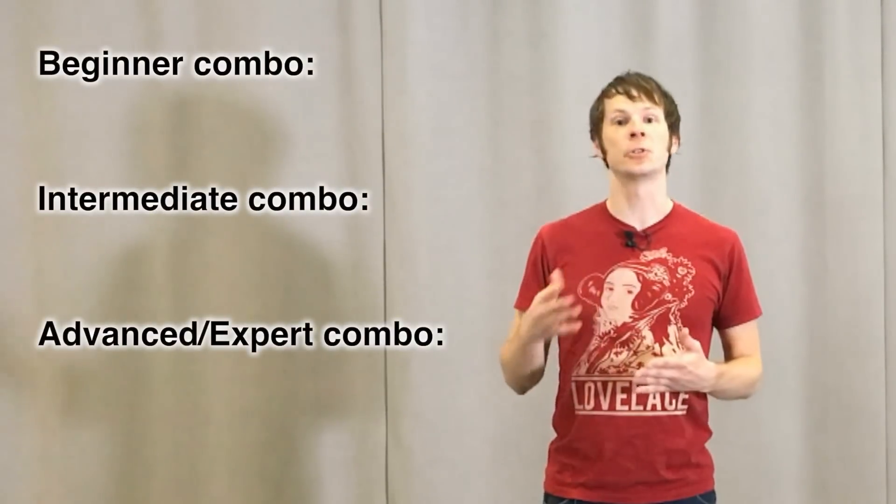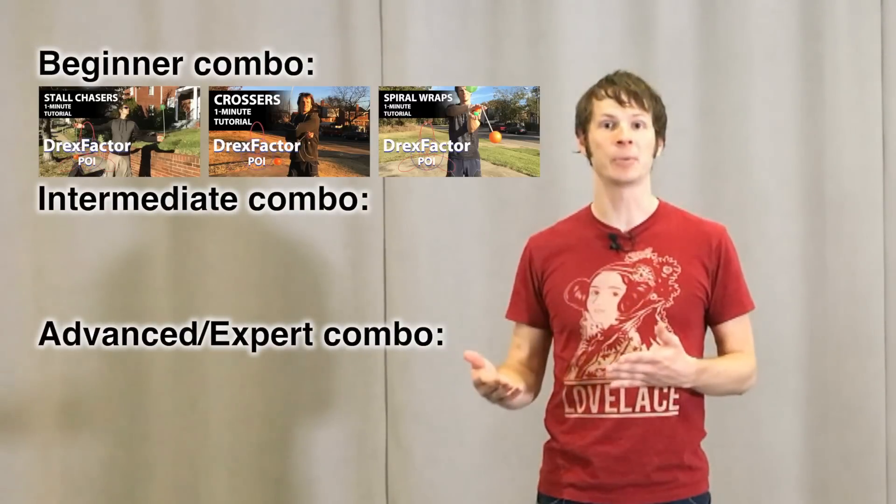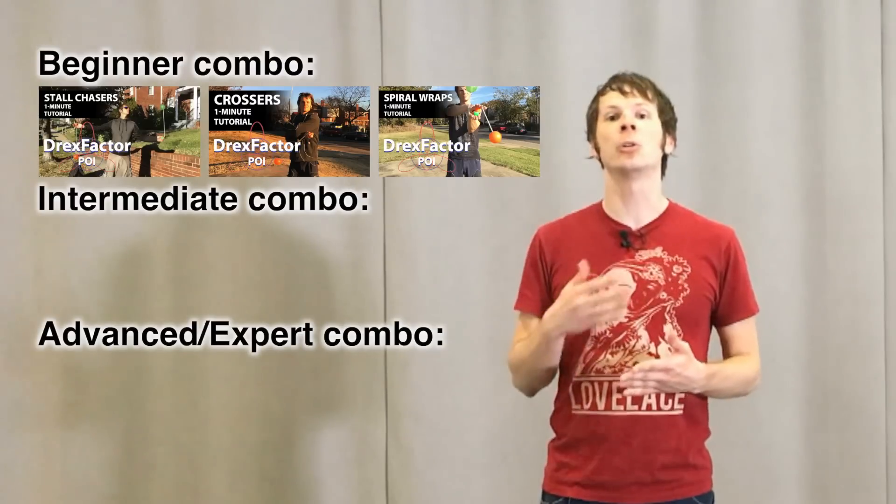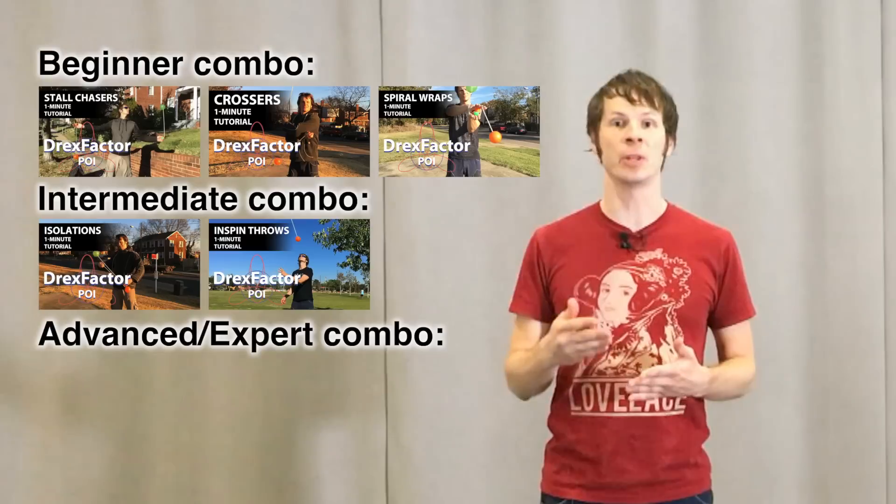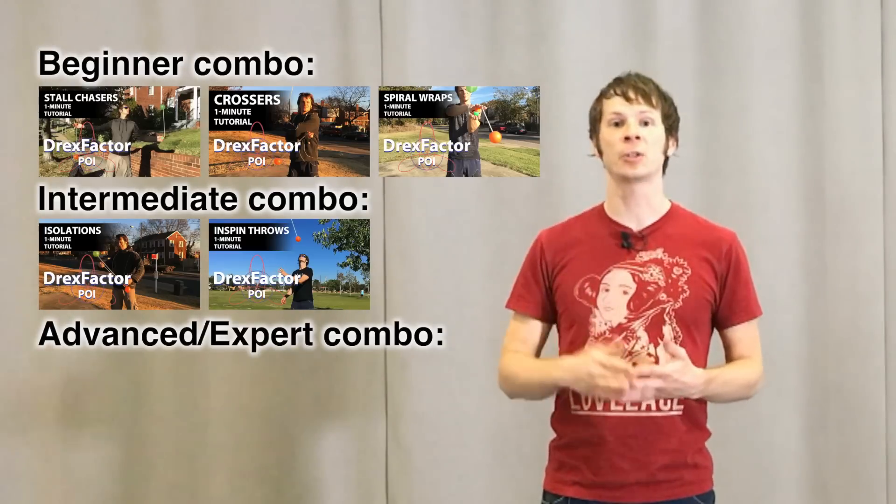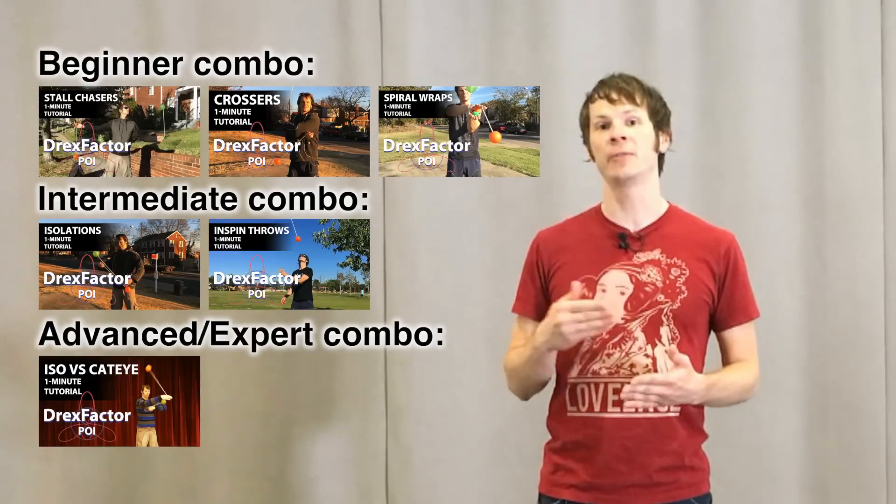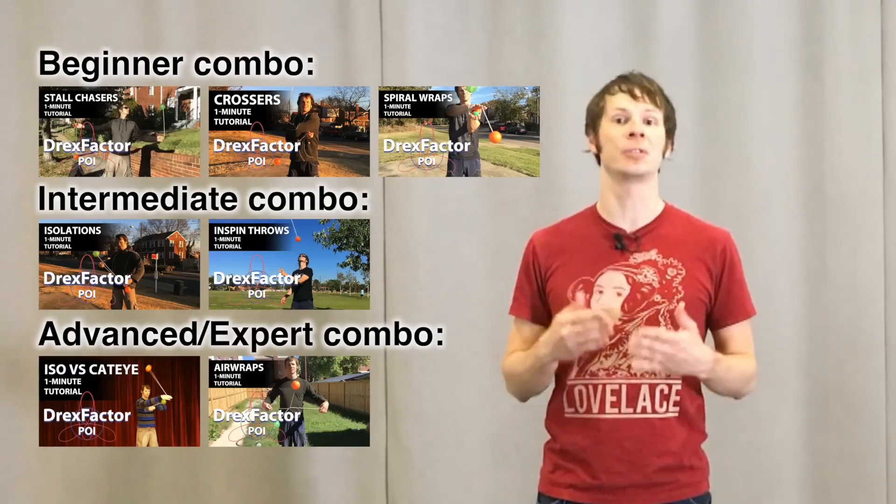For this video, here are all the tricks you'll need to have learned. For the beginner combo, you'll need to know stall chasers, crossers, and spiral wraps. For the intermediate combo, you'll also need to know isolations and in-spin throws. For the advanced and expert spinners, you'll also need to know cat eye vs isolation anti-brids as well as air wraps. I'll link to all these videos in the description as well as a playlist. So, let's begin!